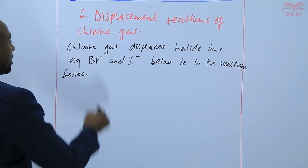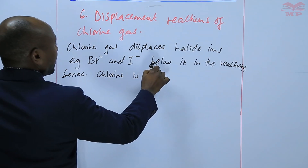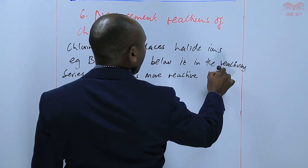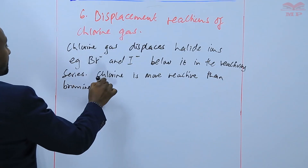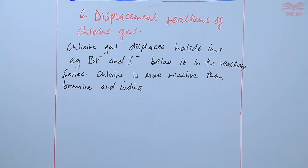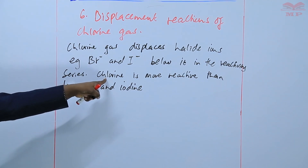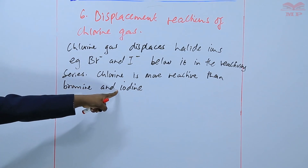Chlorine is more reactive than bromine and iodine due to its ease of electron gain. So chlorine gains electrons more easily than bromine and iodine.